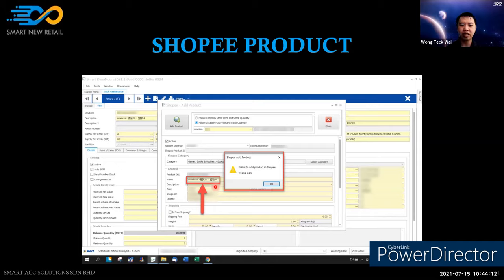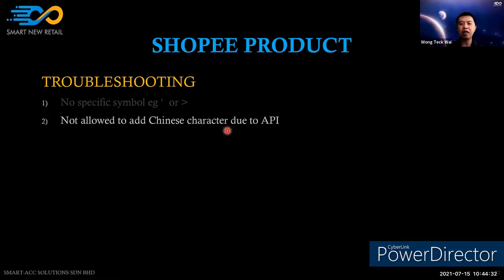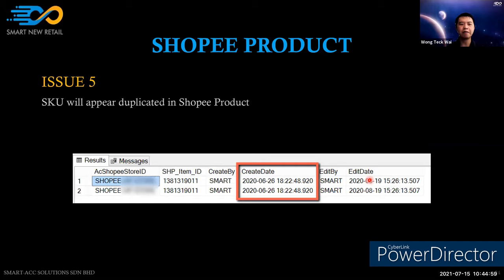The second cause of the 'wrong sign' error: the Shopee API does not allow Chinese characters, even though you can manually key in Chinese characters on the Shopee website itself. The API bridges the item name in local language — in English — and does not support other languages. This was confirmed by the Shopee programmer.